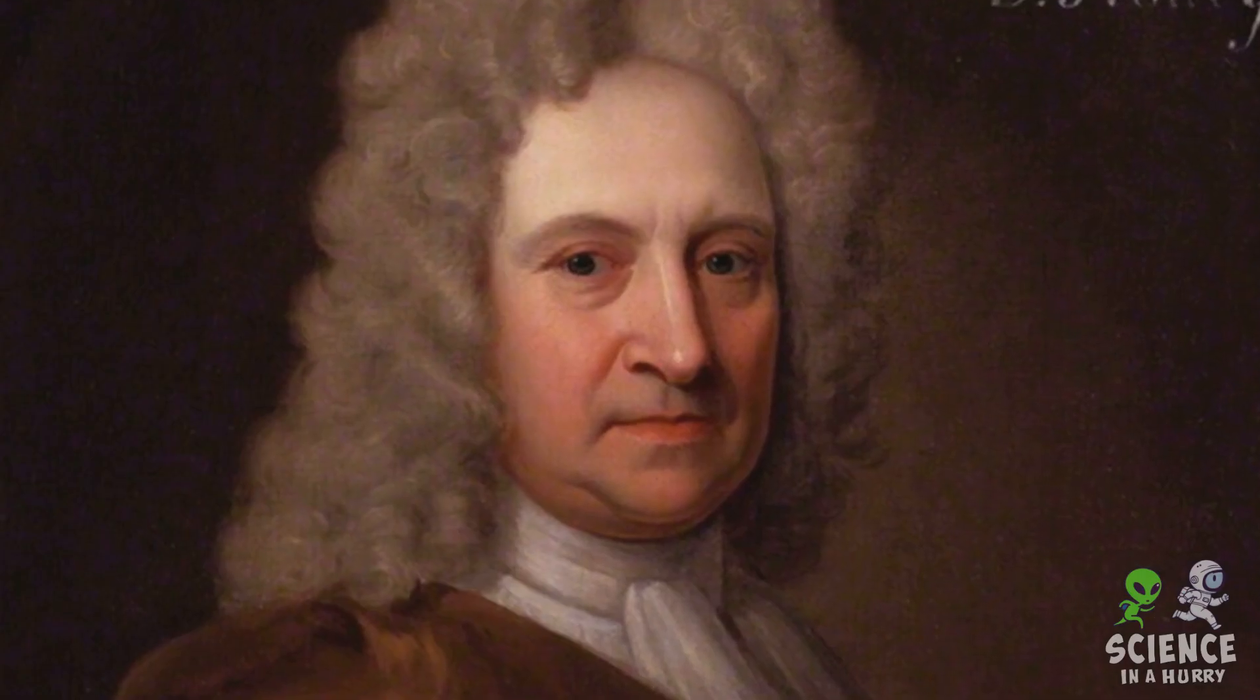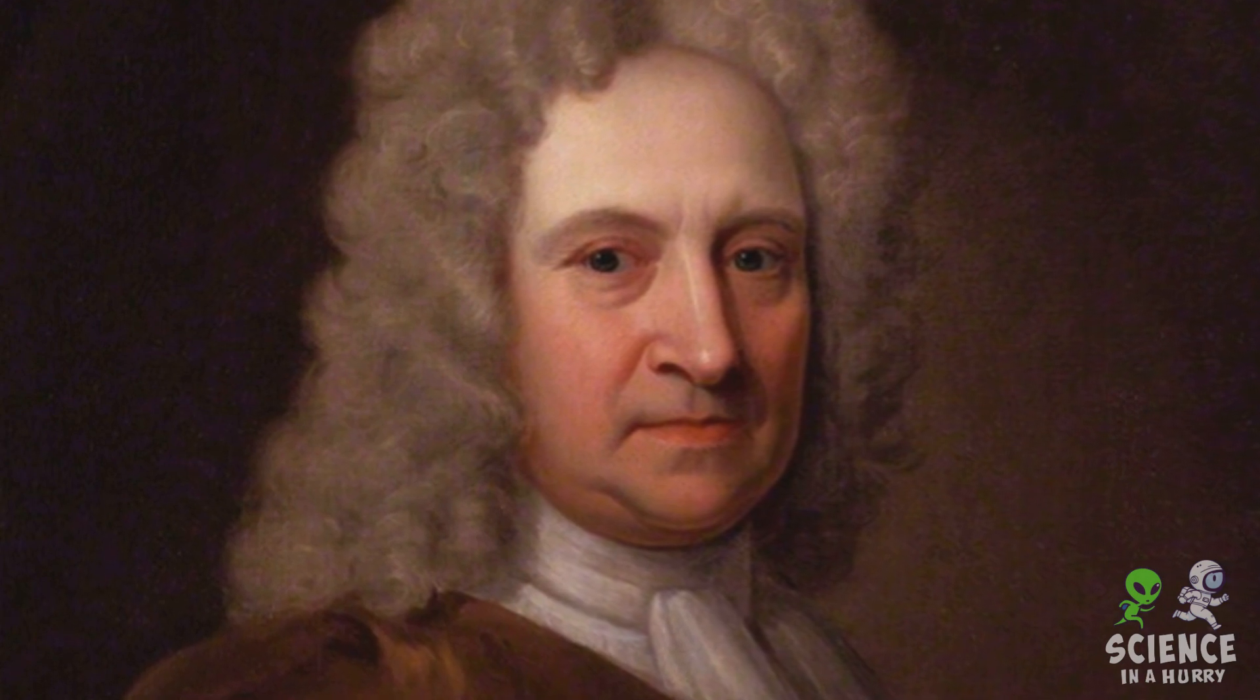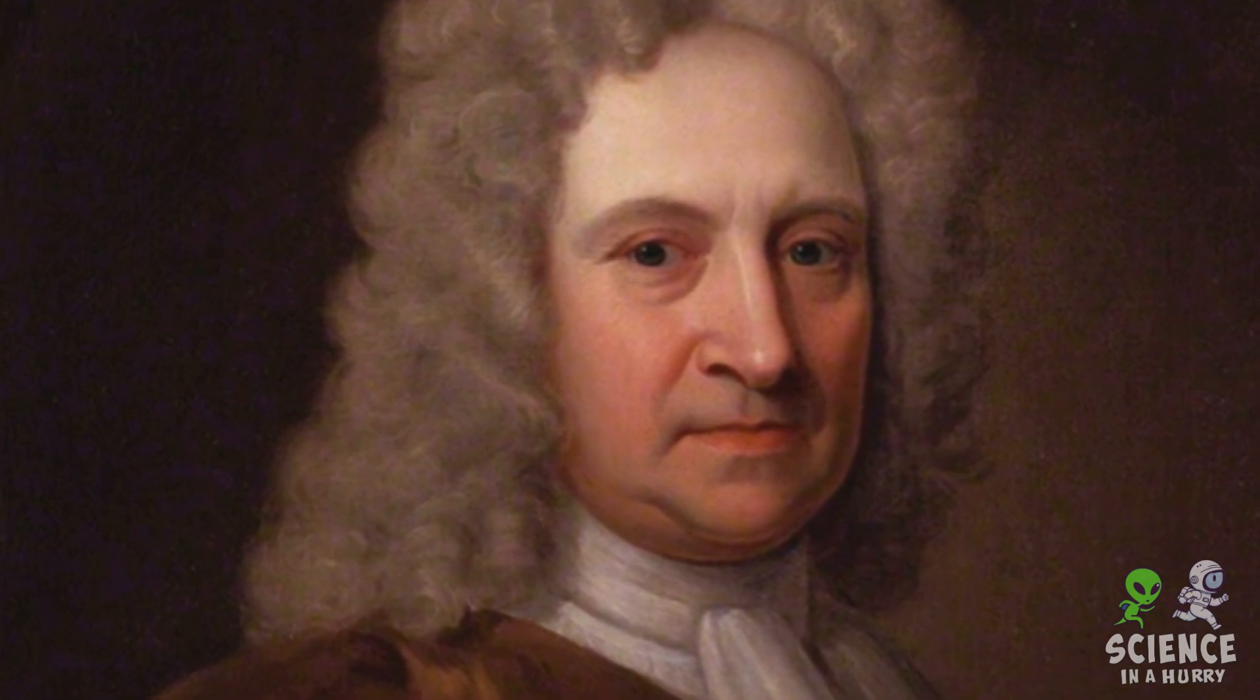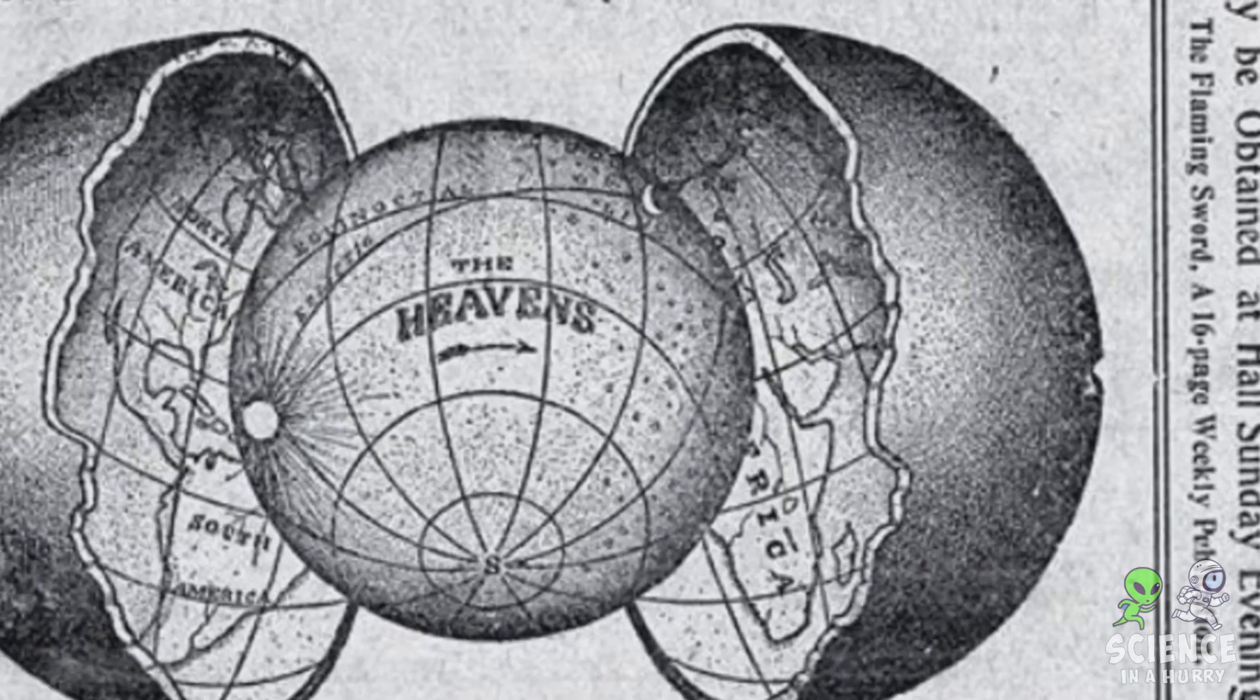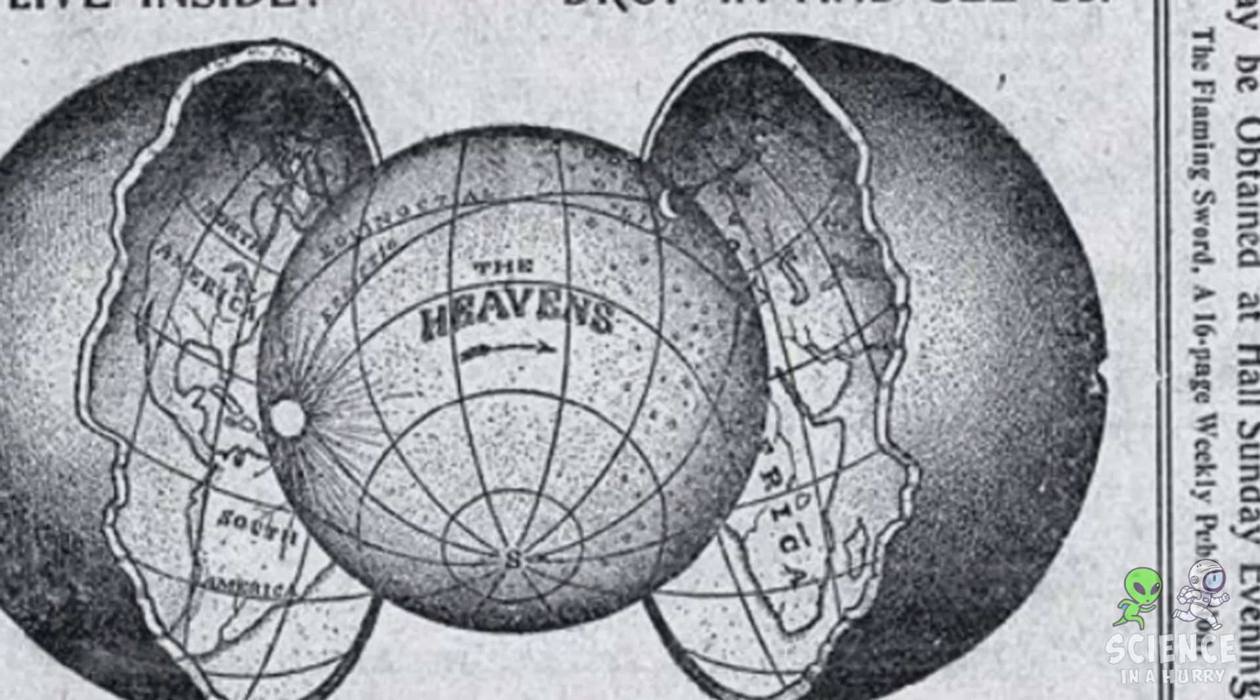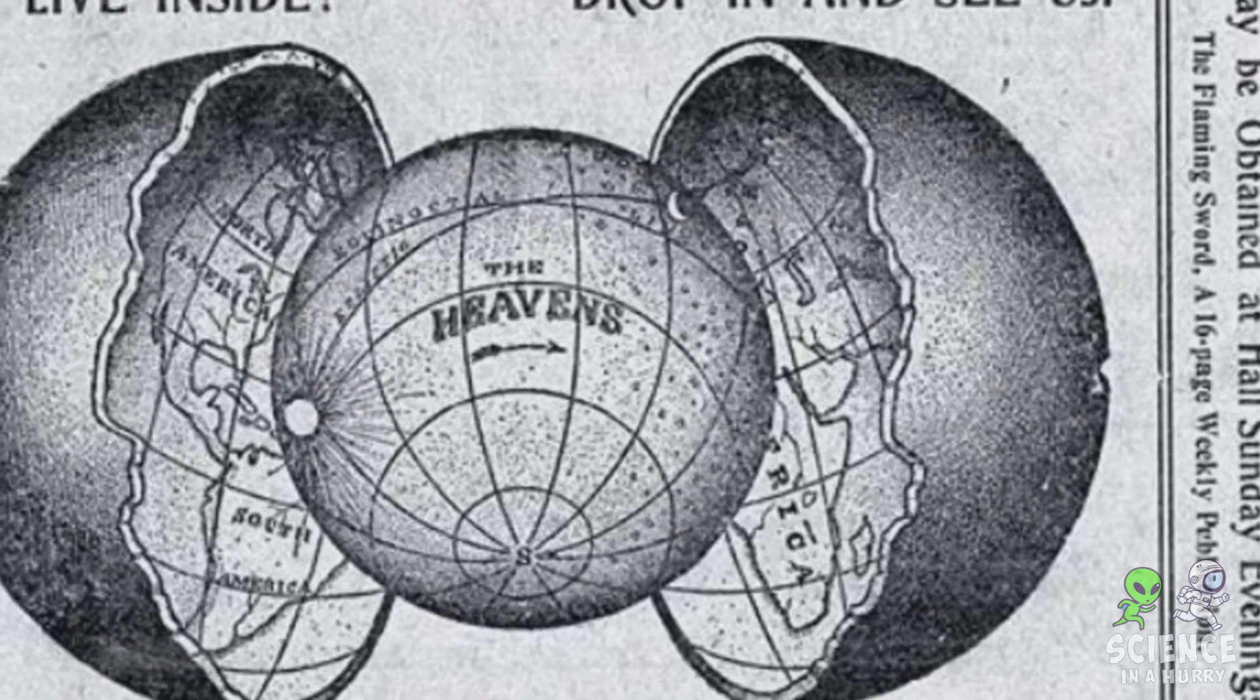Fast forward to the 17th century and we meet Edmund Halley, a renowned astronomer better known for comet spotting. But Halley had another fascination: the hollow Earth. He theorized that our planet was composed of concentric shells, each spinning at different speeds, with possibly a luminous atmosphere in the center.